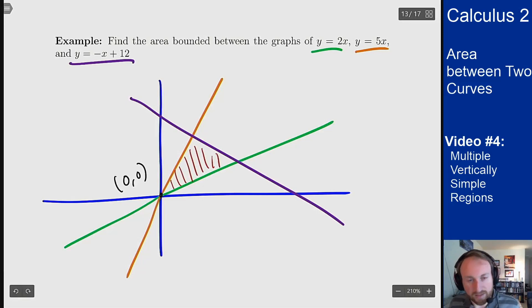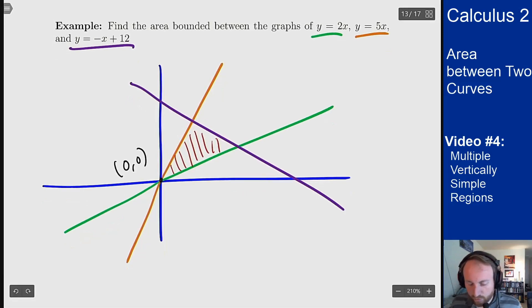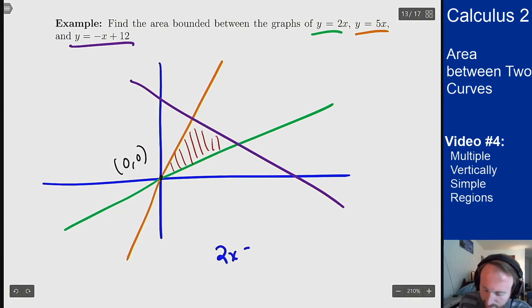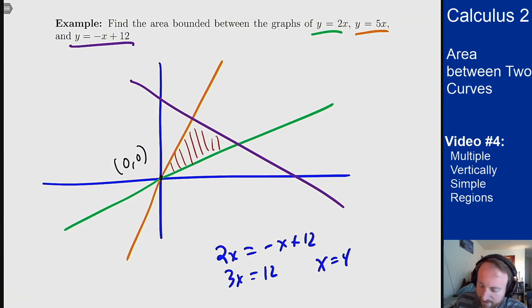So for the other two, we need to figure out where these lines intersect. So for the green and the purple, I want 2x equals minus x plus 12, 3x equals 12, or x equals 4. So green and purple cross at x equals 4, and therefore y equals 8.